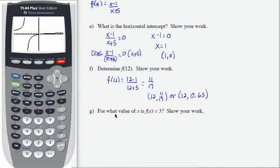And then finally, part g, for what value of x is f(x) equal 3? This is an output value, so I'm going to set my equation x minus 1 over x plus 5 equal to 3. To solve, I'm going to multiply both sides by x plus 5. That's going to have the effect of removing the denominator on the left-hand side and giving me 3 times x plus 5 on the right-hand side. That's going to be x minus 1 equals 3x plus 15.